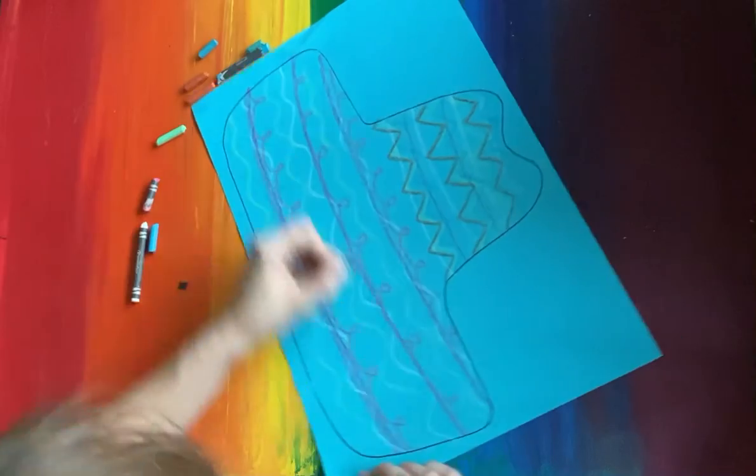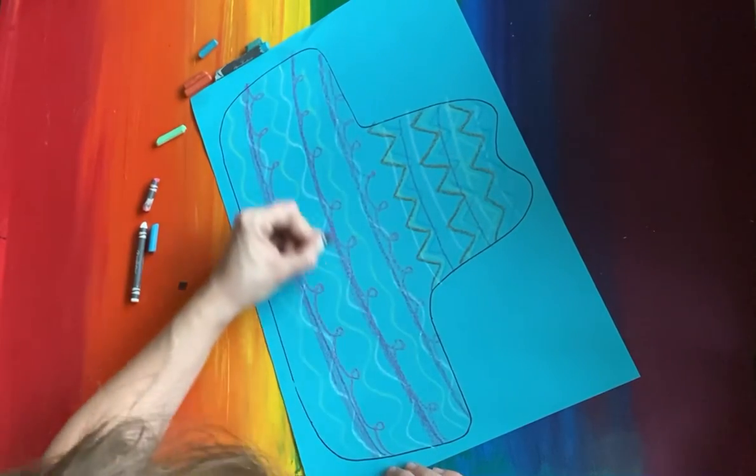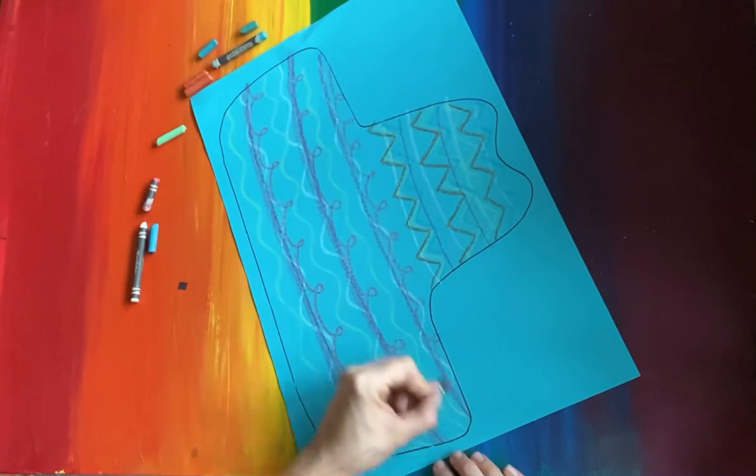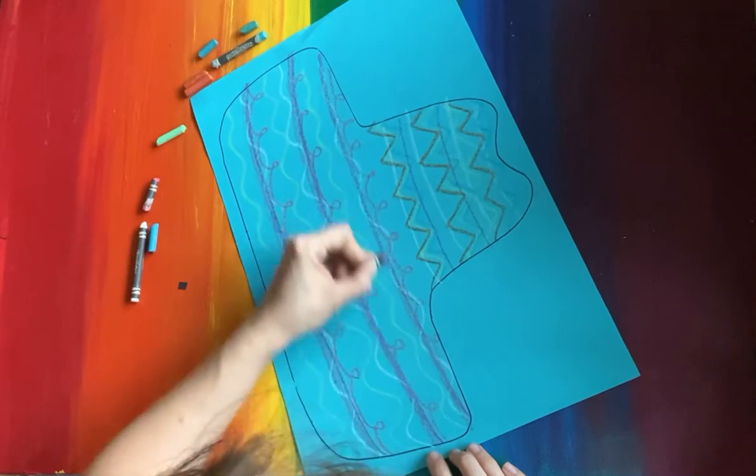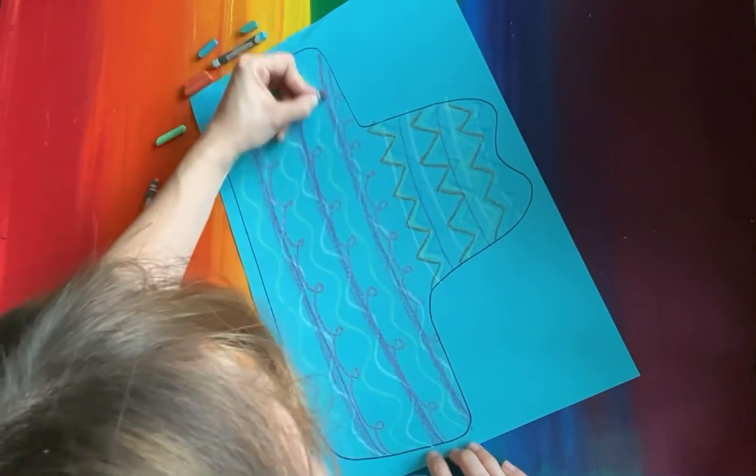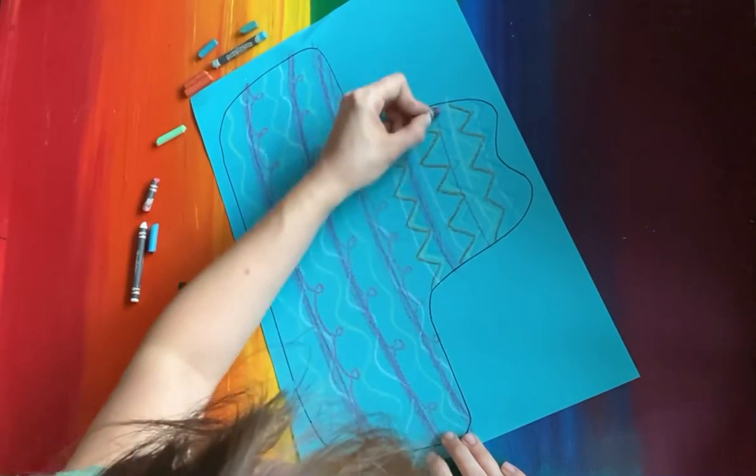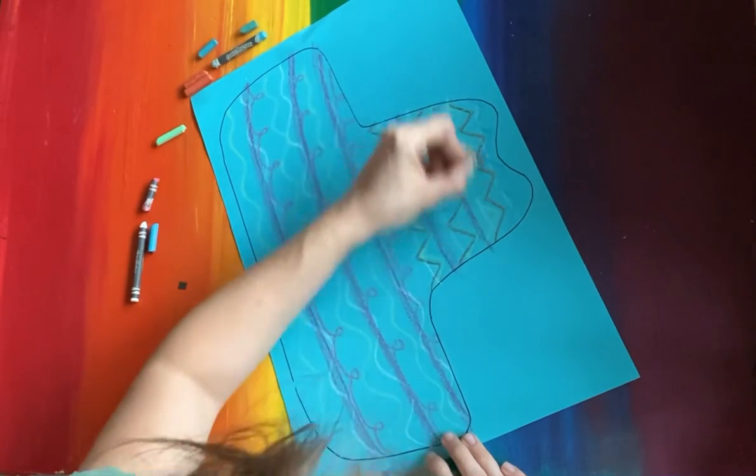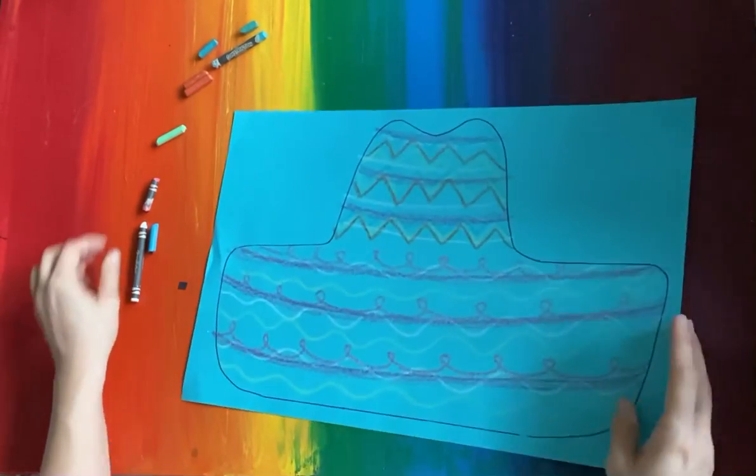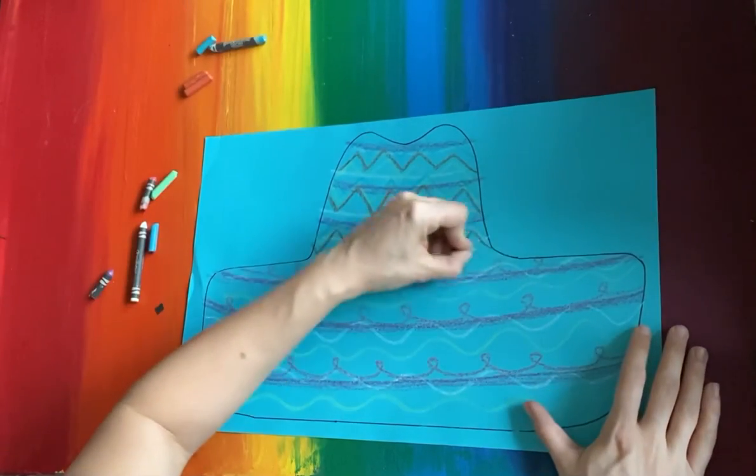So you're going to fill this sombrero with all different lines on top of each other - thin and thick, straight, curly-cue, zigzag, wavy, whatever you want. And it's okay if you go out of the lines because guess what? We're gonna cut them out! So you're gonna keep filling this awesome hat with all different lines.